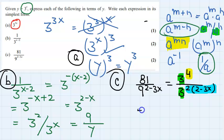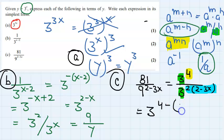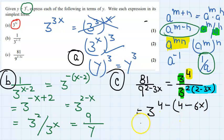So a to the power m over a to the power n equals a to the power m minus n. Opening the bracket: 2 times 2 is 4, and 2 times 3x is 6x. So we have 3 to the power 4 minus (4 minus 6x), which simplifies to 3 to the power 4 minus 4 plus 6x. The 4s cancel, leaving 3 to the power 6x, which equals y to the power 6x.